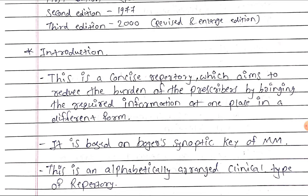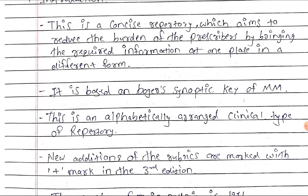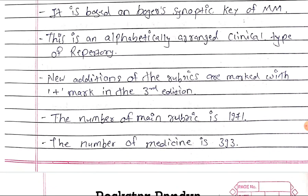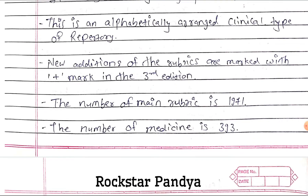Introduction: this is a concise repertory which aims to reduce the burden of the prescribers by bringing the required information at one place in a different form. It is based on Boger's synthetic key of Materia Medica. It is an alphabetically arranged clinical type of repertory. New rubrics are marked with a plus mark in the third edition. The number of main rubrics is 1971 and the number of medicines used in this repertory are 393.